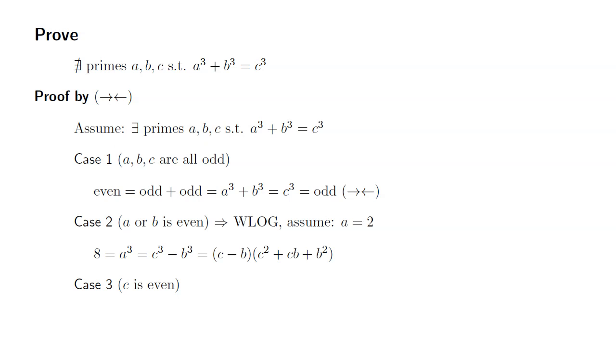Since c³ - b³ = 8, and c is larger than b, the difference c - b is at least 1. Then for c² + cb + b², since the smallest prime number is 2, the terms c², cb, and b² are all at least 4.